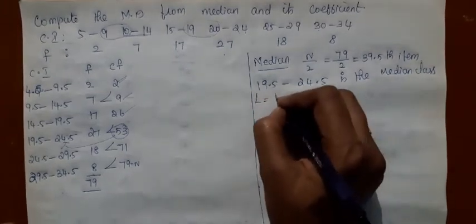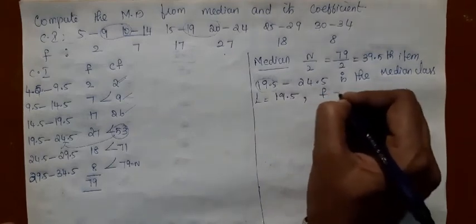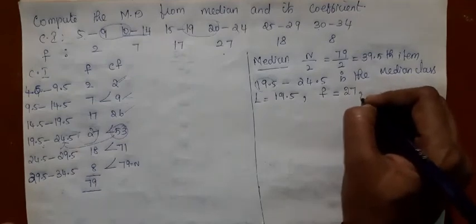L is the lower limit of this median class which is 19.5. F is the lower limit of this median class which is 27.